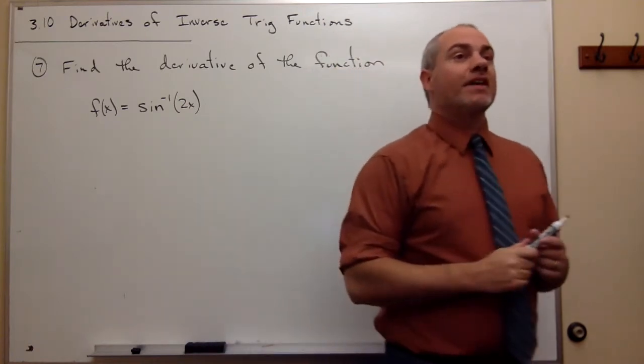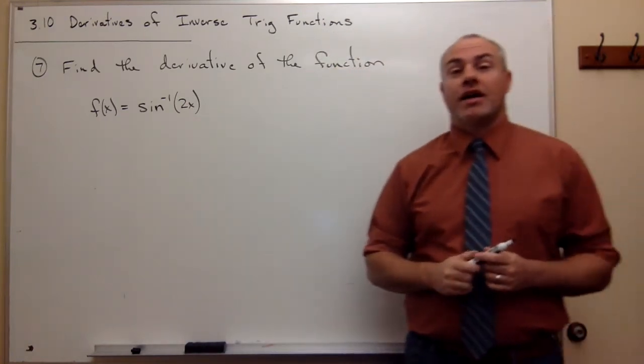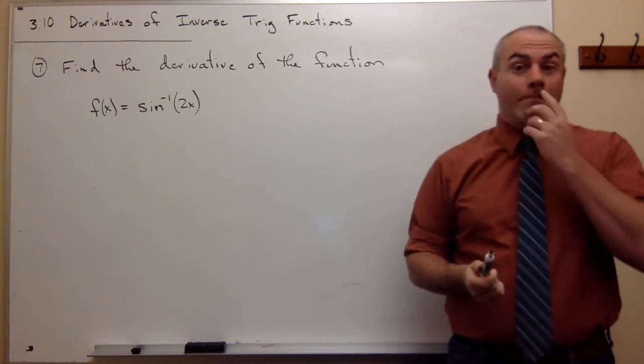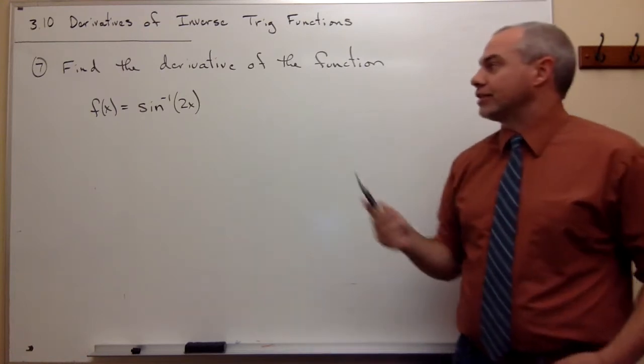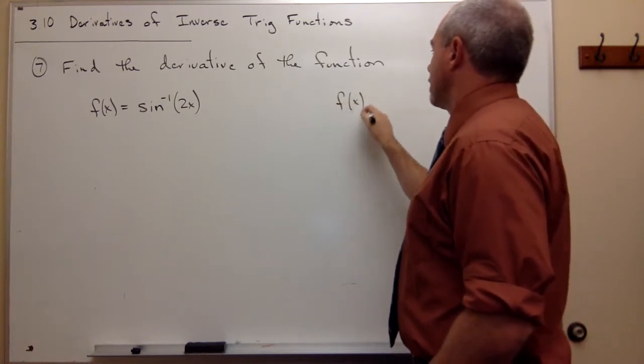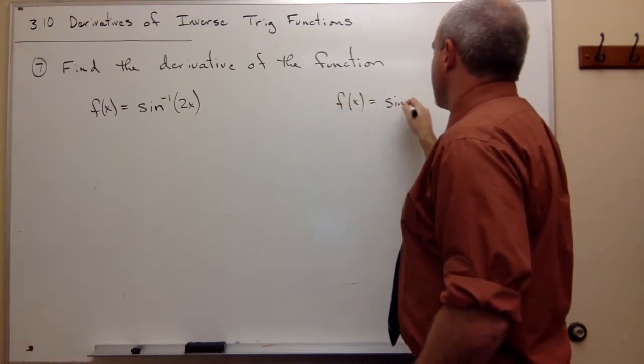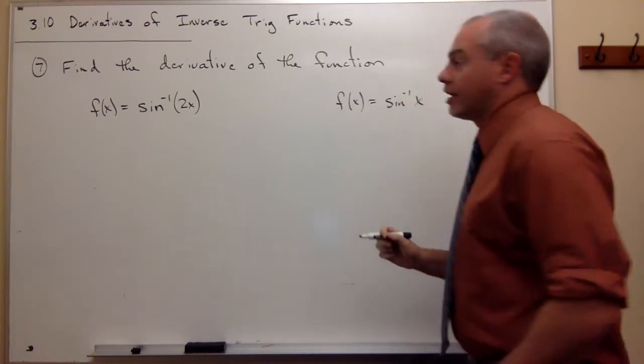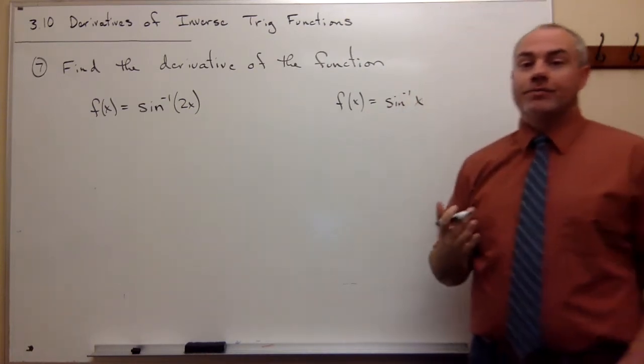This basically boils down to being a chain rule problem, but before we look at the chain rule problem, we really should ask the question: what if f(x) were just sin⁻¹(x), not of 2x? Then what would the derivative be?